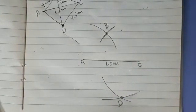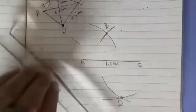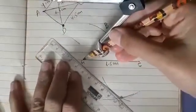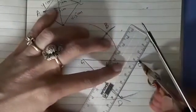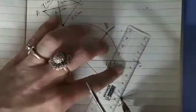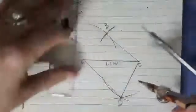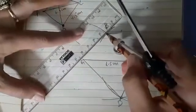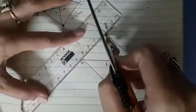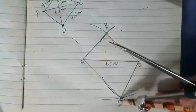So you can now see we can easily join AD, then we can join CD, then we can join BC, and we can join AC. So this is how beautifully we have got the quadrilateral ABCD.